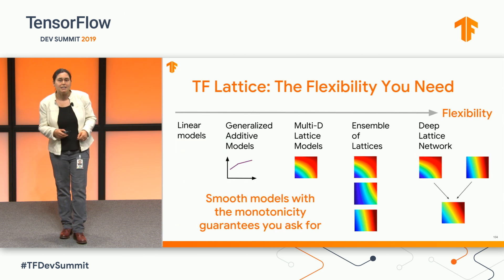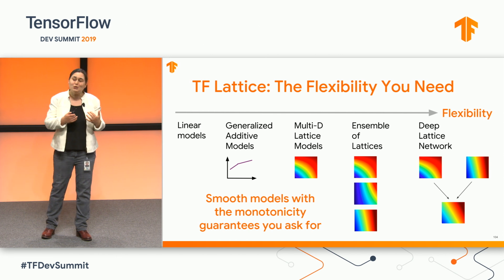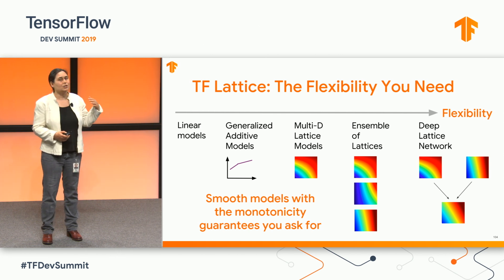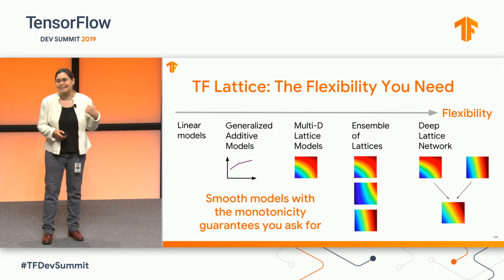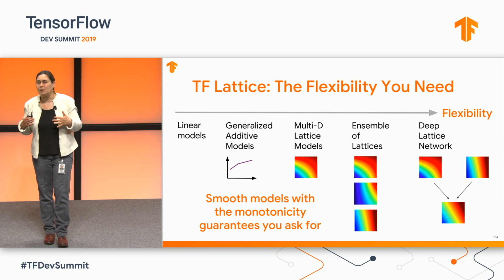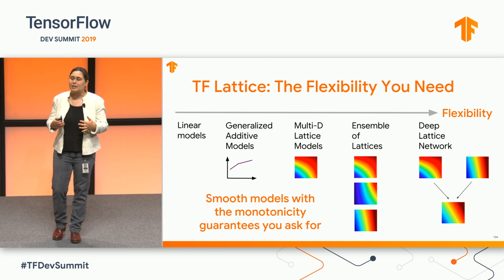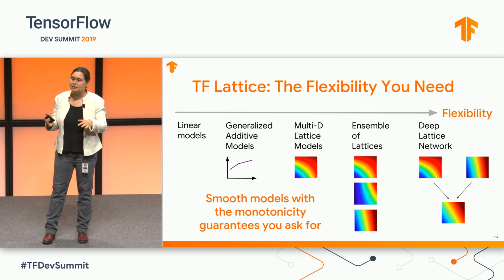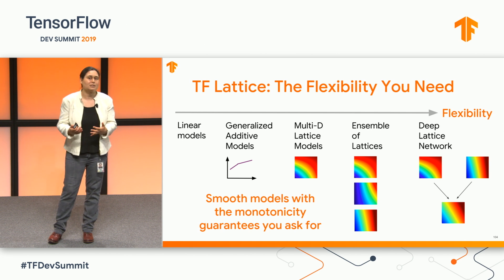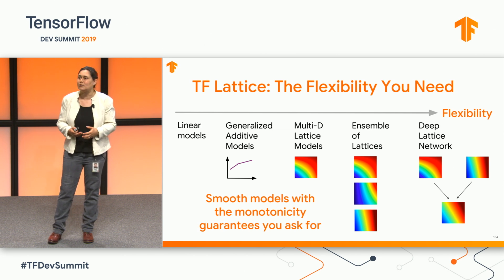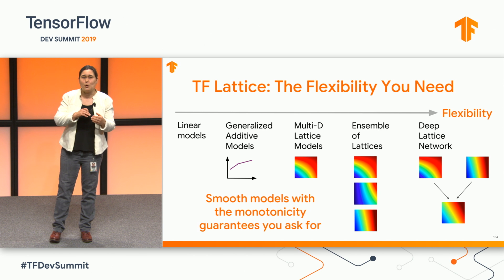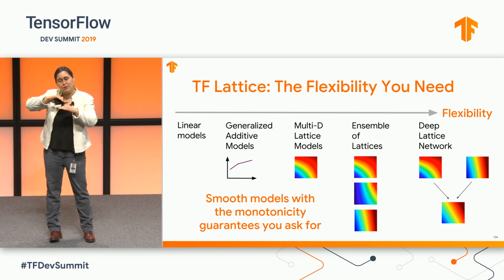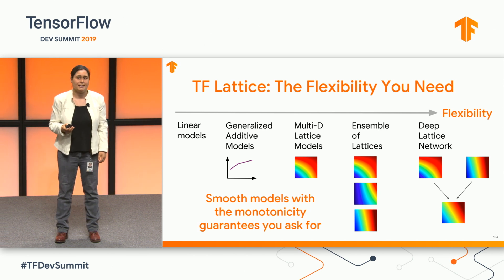With the TF Lattice package you can choose how much flexibility you want. On one extreme, you can make a linear model — very easy to make monotonic. You can create generalized additive models using those 1D lattices, or do multi-dimensional lattice models. If you have a lot of features, you may want an ensemble of lattices. We've set this up with layers so you can mix, match, and plug and play with other TF layers to create cascaded deep lattice networks. Everything in the package gives you smoothness — compared to decision trees, you won't have piecewise constant behavior — along with the monotonicity guarantees you select.